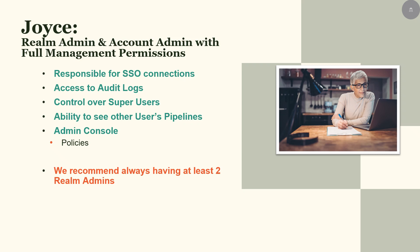Just like the account admin River, Joyce has access to the admin console. Since Joyce is both a realm admin and an account admin, she has all the permissions that River does, but also has access to some realm admin-specific tabs such as the SAML tab for SSO, audit logs, and the Policies tab to control password and session policies.